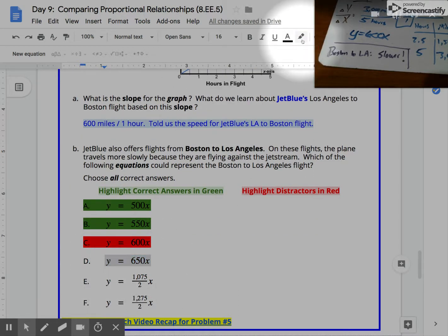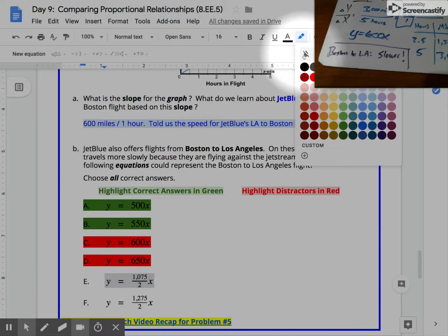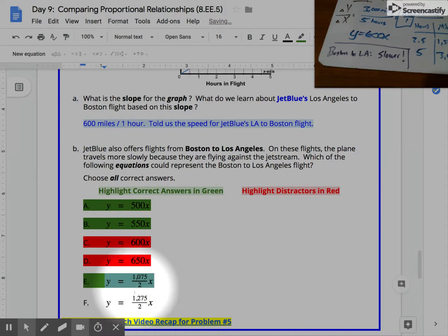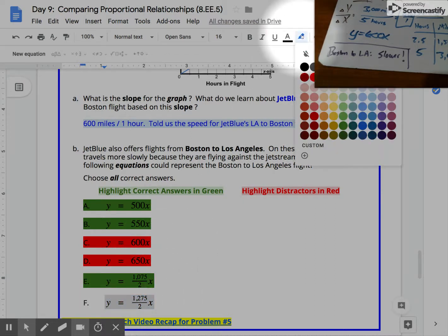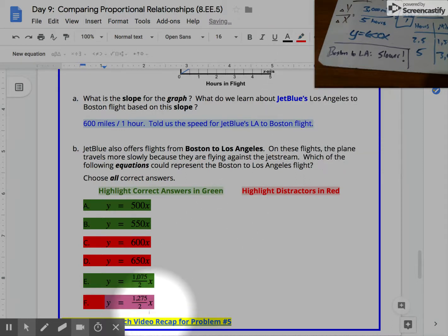650 is too big. And then a bit of the challenge here. You just need to divide by 2 here. And you see that this unit rate, 1075 divided by 2, works out to a little over 500 miles per hour. But this one works out to a little more than 600 miles per hour, which is why F is also not correct.